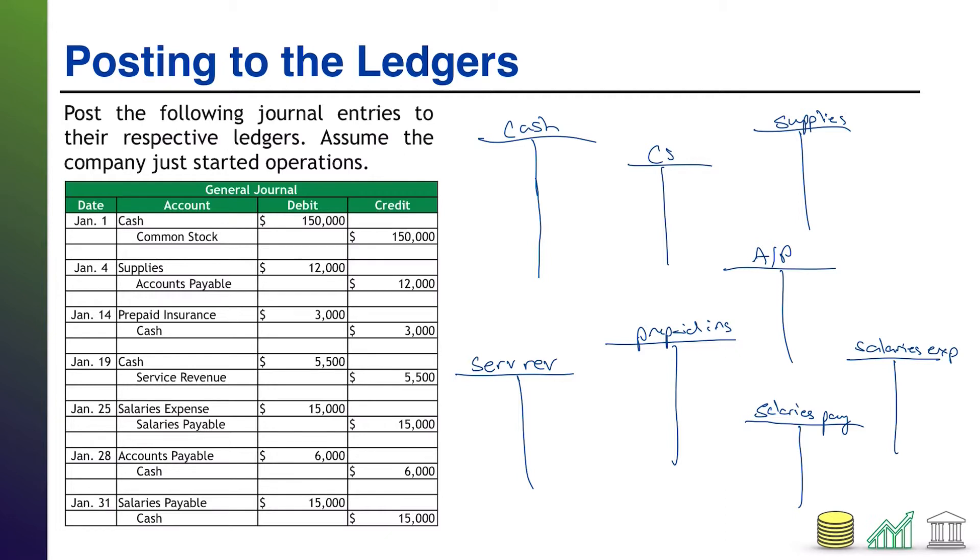And so when I post my journal entries to the ledgers, I'm literally breaking apart the journal entries piece by piece and putting the activity where it goes in their respective ledgers. So starting off with the first entry, cash, debit 150. So there's my first entry to cash. Now, again, good practice would be to put a date, maybe a little description of what's going on here. For simplicity, I'm just going to put the values to show you how this is done. Common stock is the offsetting credit in that case, 150. My next entry, debit supplies of 12,000. My offsetting credit is accounts payable.